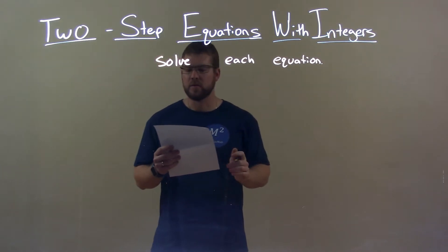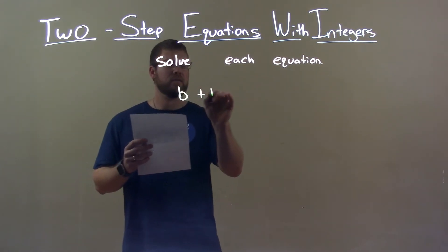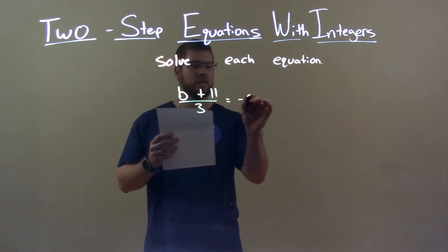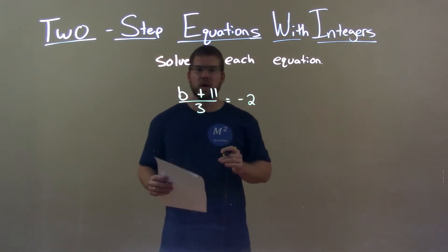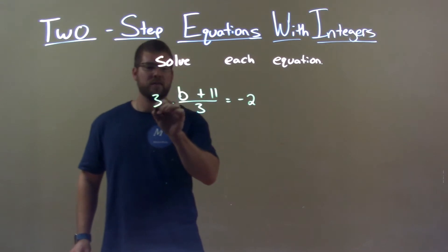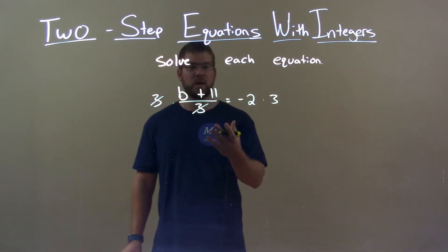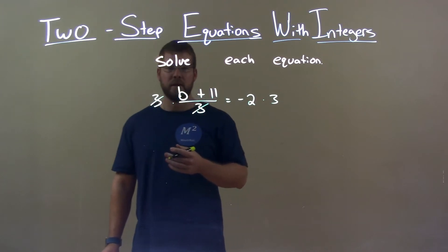If I was given this equation, b plus 11 over 3 equals negative 2. First thing I want to do here is multiply both sides by 3. Since we're dividing by 3, the opposite of division is multiplication. That will eliminate that 3 in the denominator.